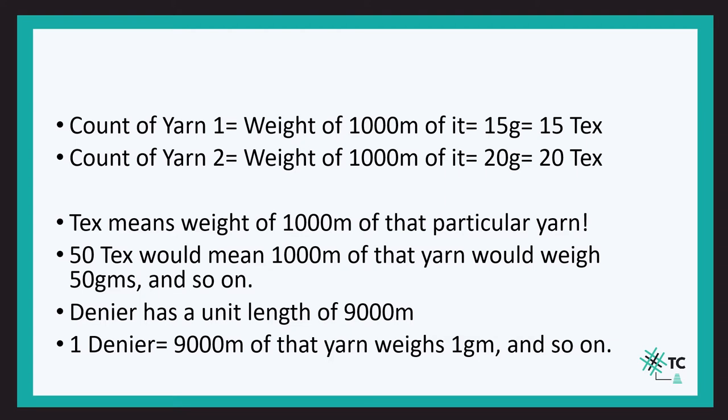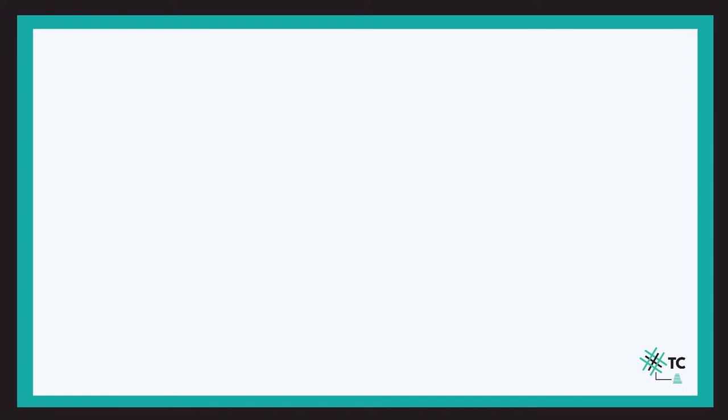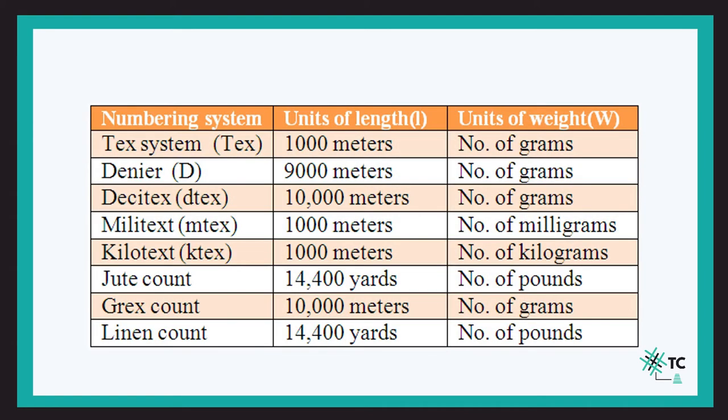There are various other numbering systems as well, like decitex and millitex, where the unit length changes. In tex the unit length is 1000 meters, in denier it is 9000 meters, and in decitex and millitex we have different unit lengths.